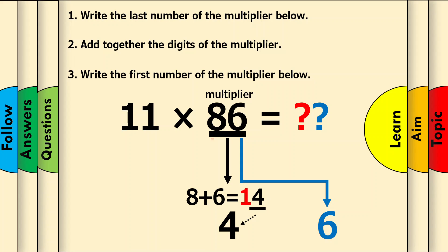Next, write the first digit of the multiplier below. The first digit is 8, so put that underneath.